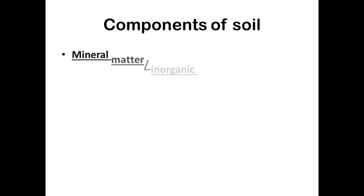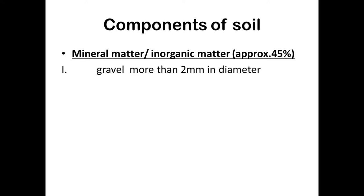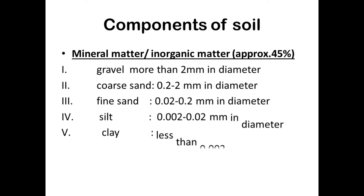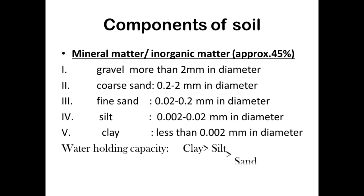The components of soil: the first property is mineral or inorganic matter, found at approximately 45%. The various components of mineral matter are gravel (particle size more than 2 mm), coarse sand, fine sand, silt, and clay (particle size less than 0.002 mm). Based on particle size, clay has maximum water holding capacity, followed by silt, then sand, then gravel.